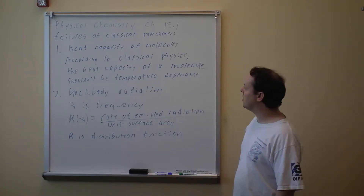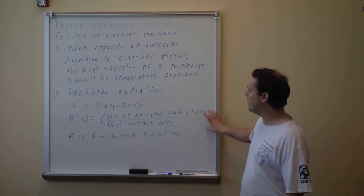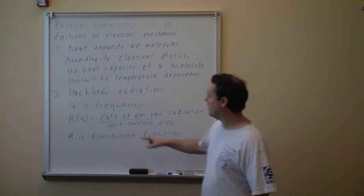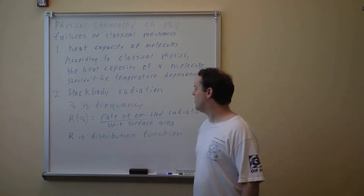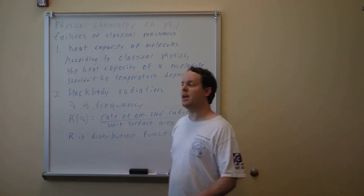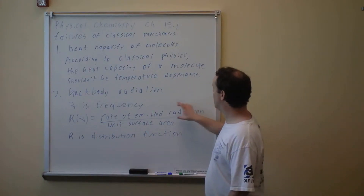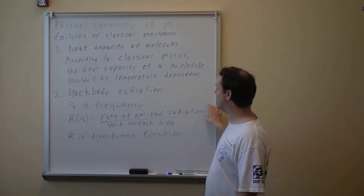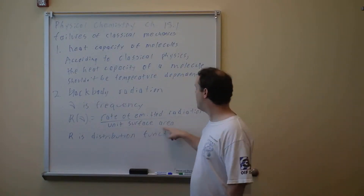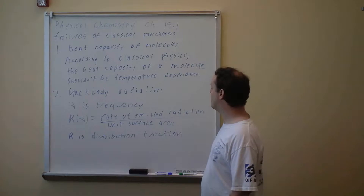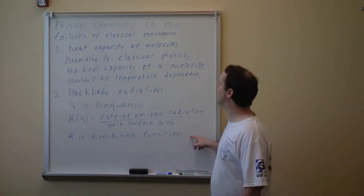The second failure of classical mechanics is black body radiation. We're going to explain it graphically and numerically. Nu is frequency — we covered that last term. We have a distribution function here, capital R — not the gas constant or Rydberg constant. It's a function of nu, and what it is is the rate of emitted radiation, or specifically electromagnetic radiation, divided by the unit surface area of an object. R is a distribution function.